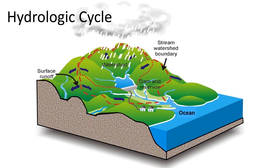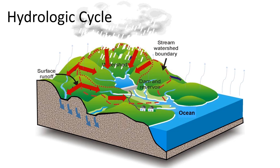Once the water lands on the ground, it can do one of three things. It can run off through channel flow and enter streams, rivers, and lakes. It can infiltrate into the ground and recharge the aquifer below. Or it can evaporate and begin the cycle all over again.